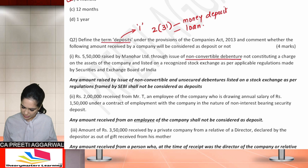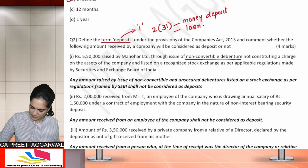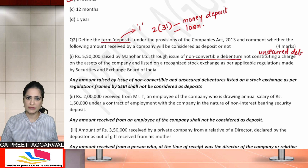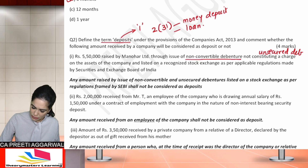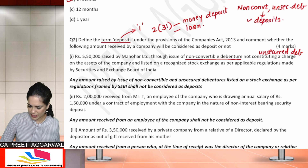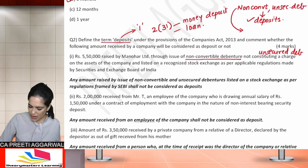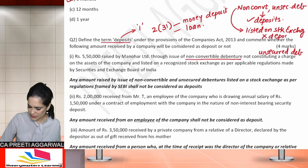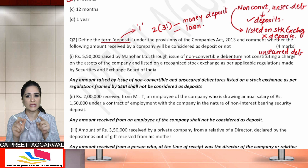They are talking about non-convertible unsecured debentures — not constituting a charge. Please listen carefully: non-convertible unsecured debentures are generally considered as deposits. However, if such non-convertible unsecured debentures are listed on the stock exchange, then they are not considered as deposits. Remember this — if you don't, pause the video and write it down.